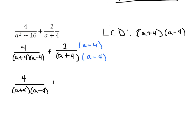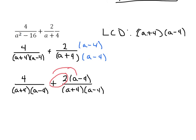That one just stays the same — since it already had the LCD, we didn't change it at all. The other one is going to be 2 times (a minus 4) over a plus 4 times a minus 4. Now that these have a common denominator, we're going to go ahead and put the numerators together.